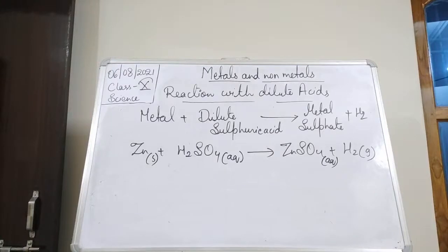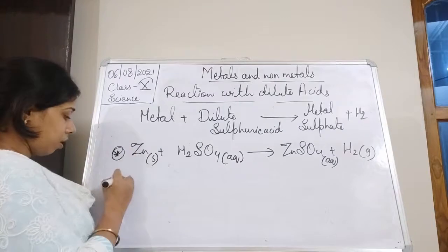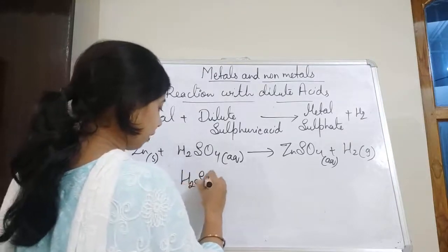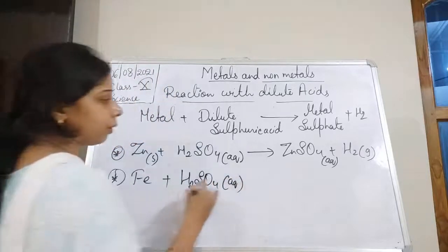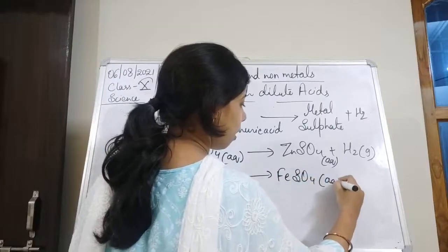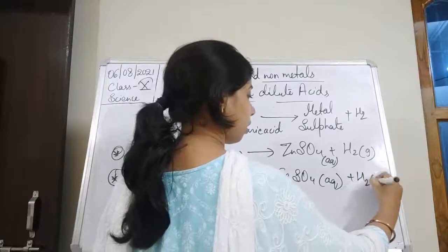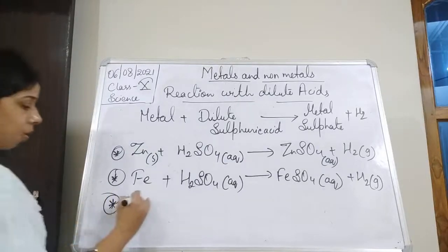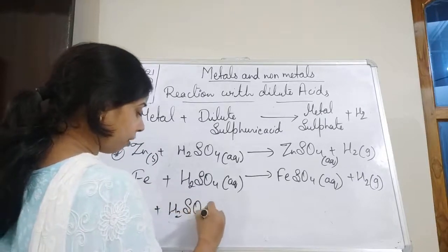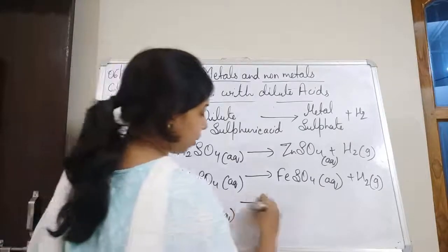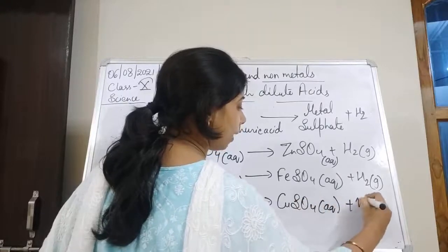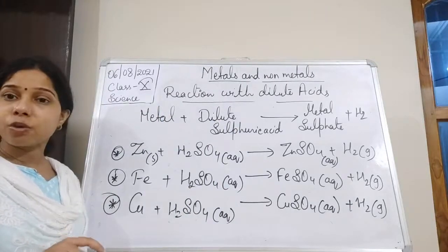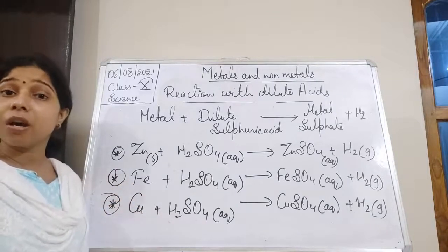The next one is iron. The reaction is again very slow. Iron reacts with sulfuric acid to form ferrous sulfate, FeSO₄ (aqueous), and H₂ is released. Additionally, copper reacts with sulfuric acid to form copper sulfate, CuSO₄ (aqueous), and H₂ gas is released. This is how the reaction occurs between metals and sulfuric acid or hydrochloric acid.